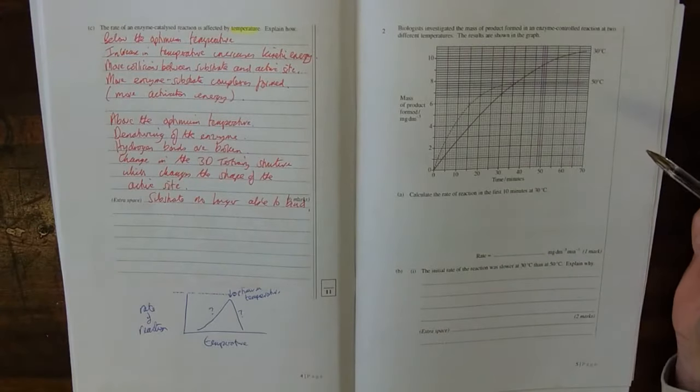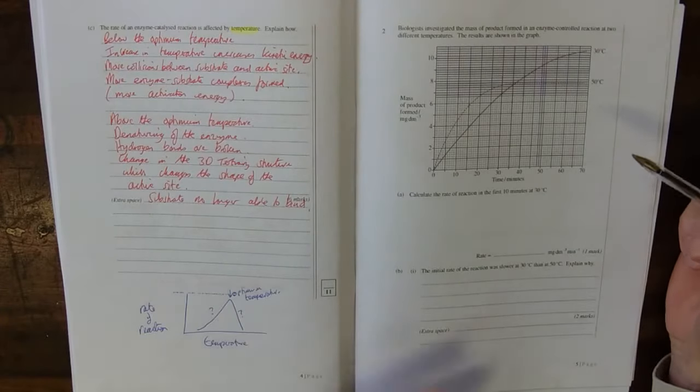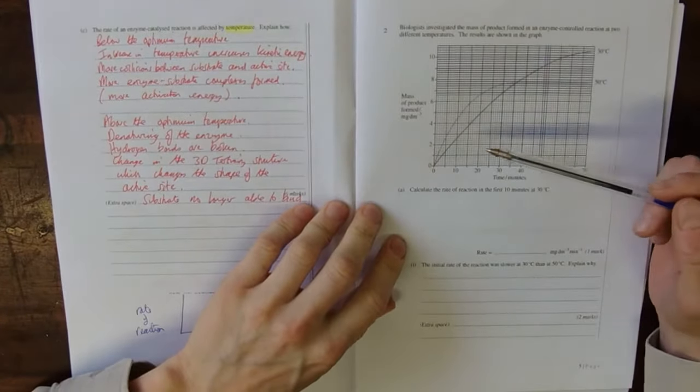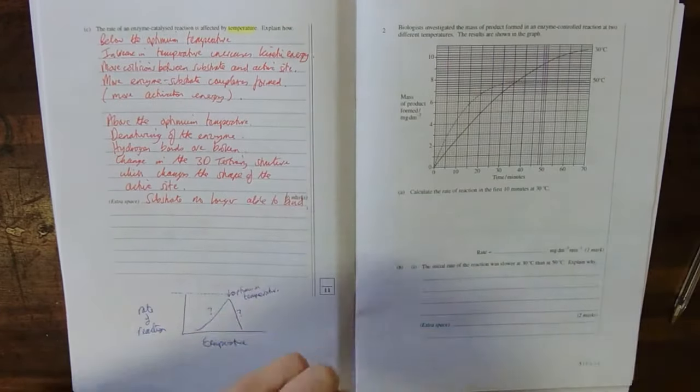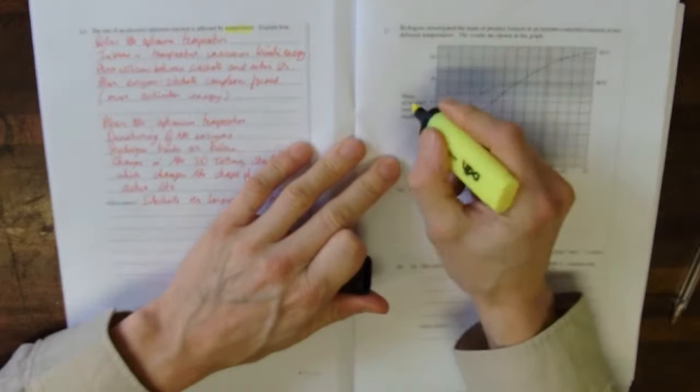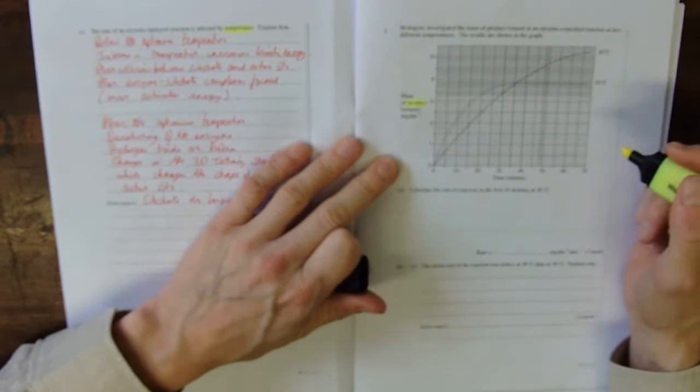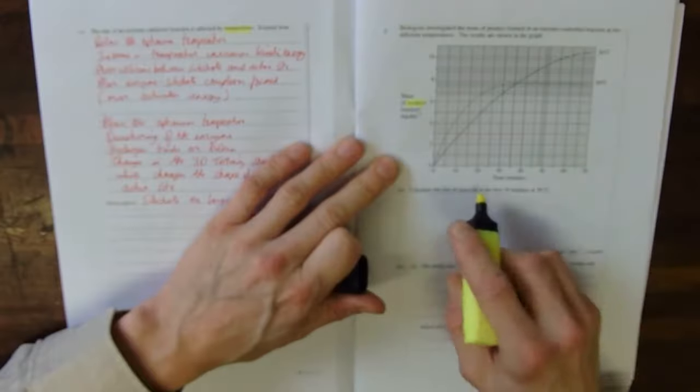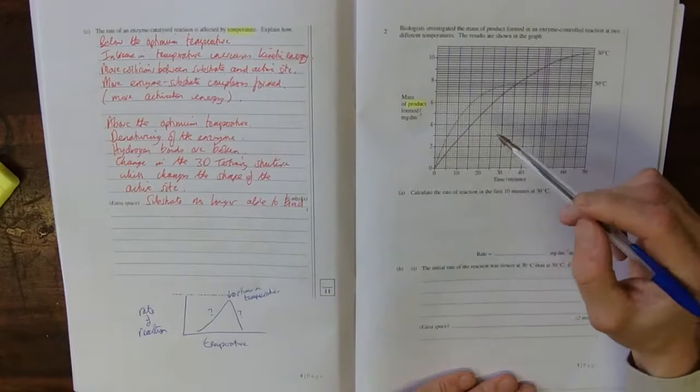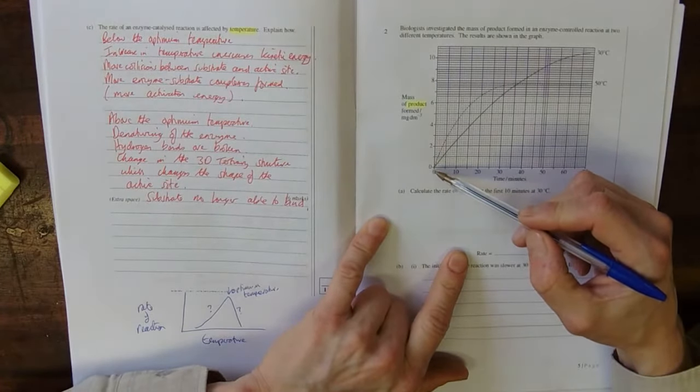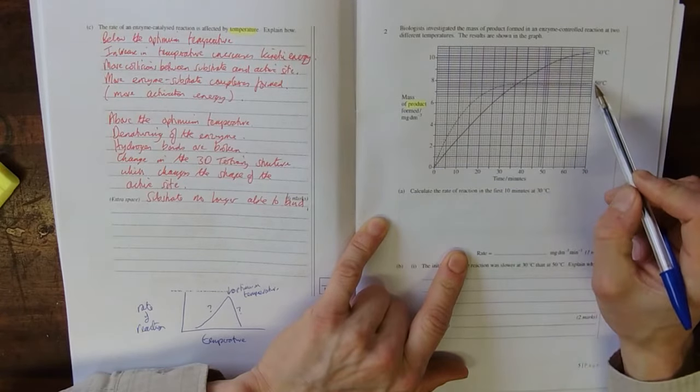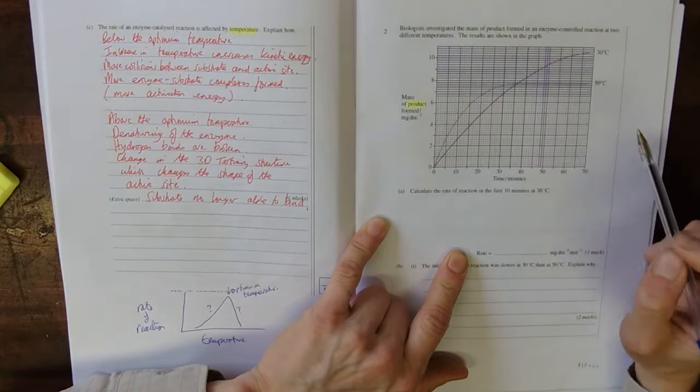This is the Key Assessment 3 Core Concepts and the Option Reset Paper. We've got a graph here showing mass of product formed. So this is our product from an enzyme controlled reaction at two different temperatures, and this is time. So this graph is a typical time graph. At the start we've got the substrate and then at the end we've got product.